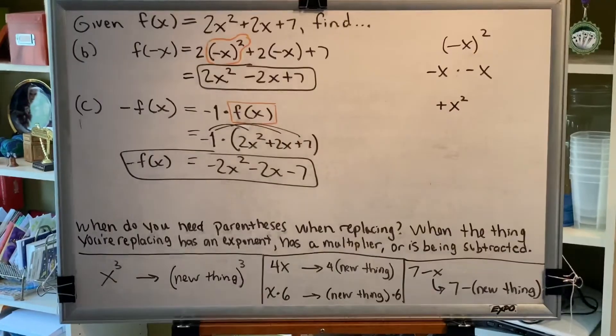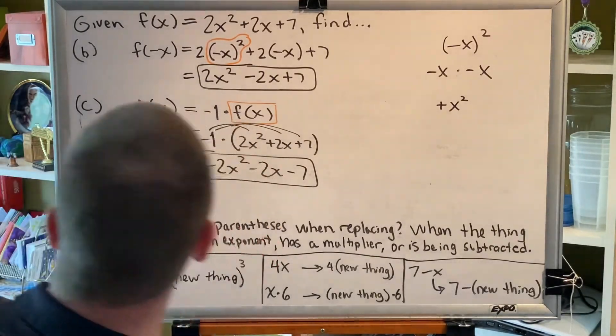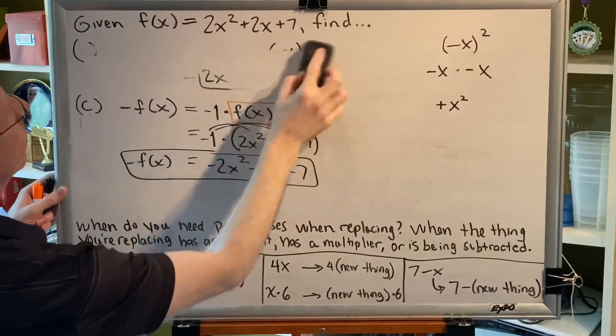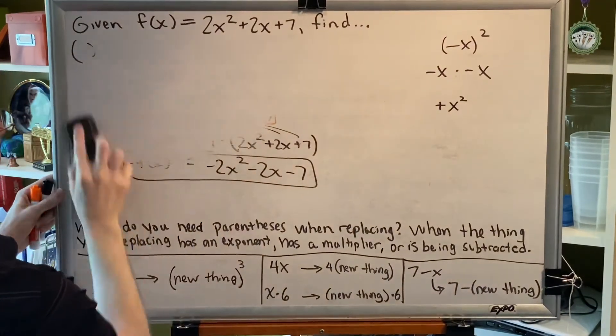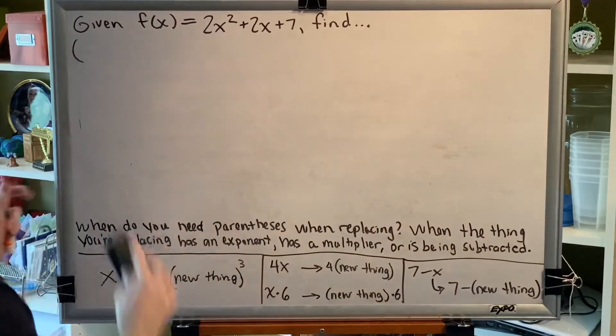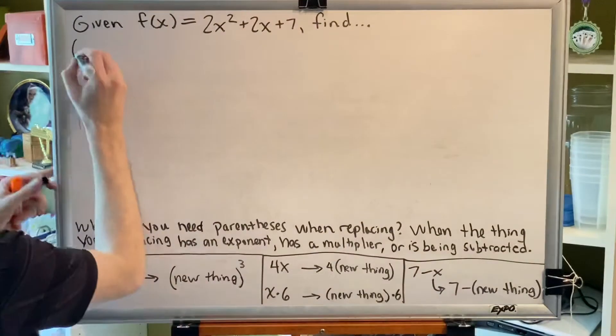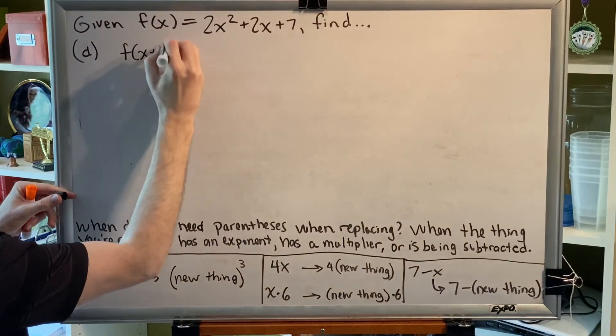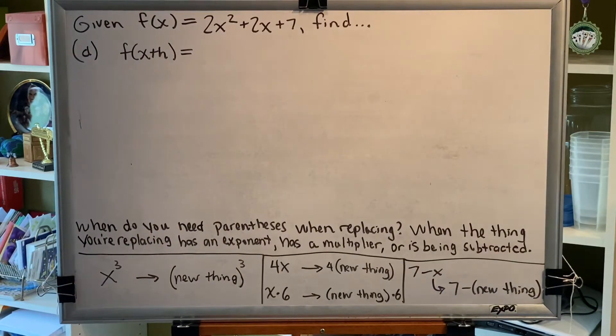Alright, three parts down, one to go. So we're now going to do part D. Part D. Find f(x + h). Well, same idea as before. Everywhere we see an x, we're going to put an x + h. And we'll use parentheses when necessary.